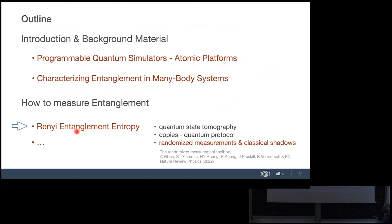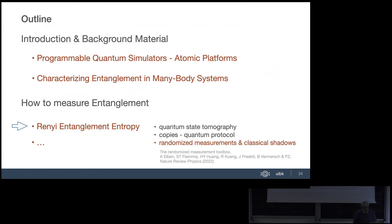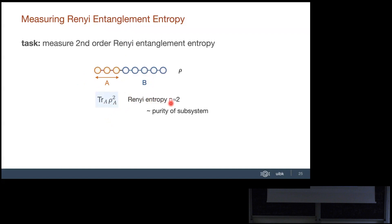Now let me go back and talk about how we measure Rényi entanglement entropy — work done some time ago using the randomized measurement toolbox. I want to build up how we approach these problems on actual experimental devices. We want to measure, for example, the trace of rho_A squared — the purity — which gives the Rényi entropy. This is not a normal expectation value because it is a nonlinear functional of the density matrix.